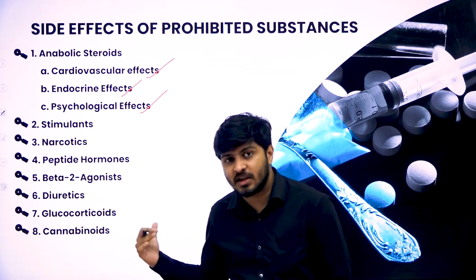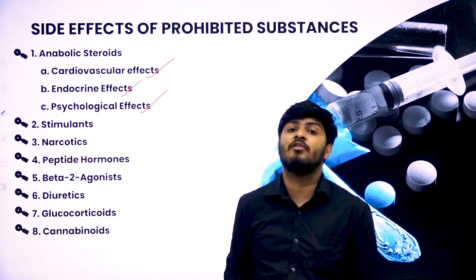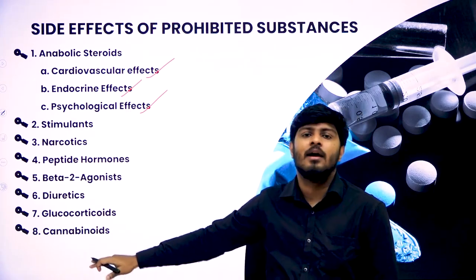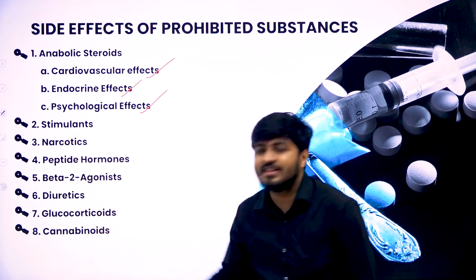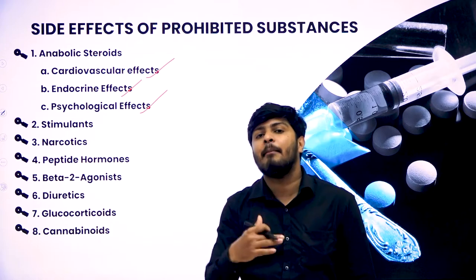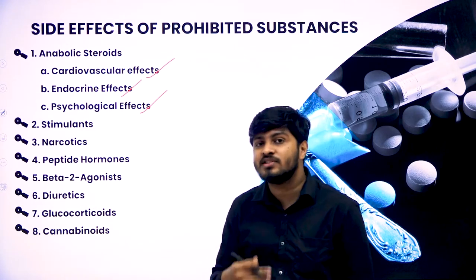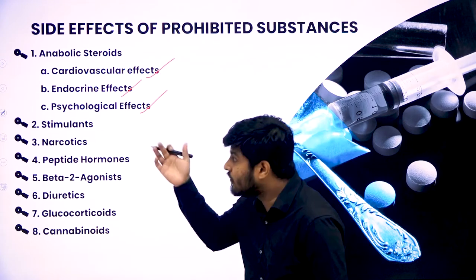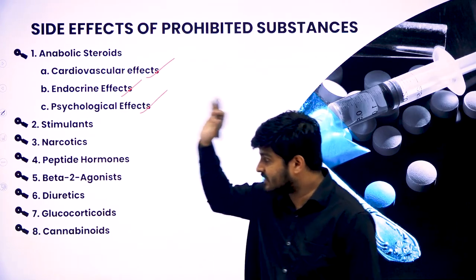Then you have stimulants. Stimulants make your reflexes very fast at the point of consumption and at young age, but later when you grow older all the side effects will take place — you will get nerve damage and a lot of nervous system problems. The same happens with every other component or doping method: narcotics, peptide hormones, beta-2 agonists, diuretics, glucocorticosteroids, and cannabinoids all target a particular part of your body. Whatever part they improve at the time of consumption in your younger age, the same part will be damaged later when you grow older.